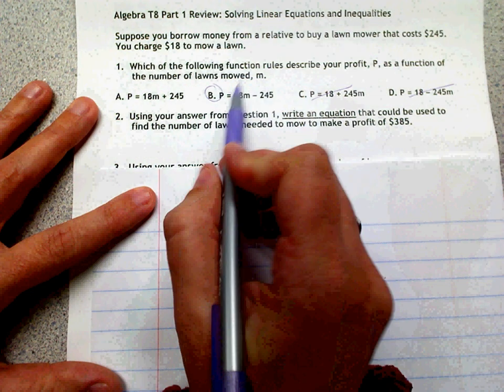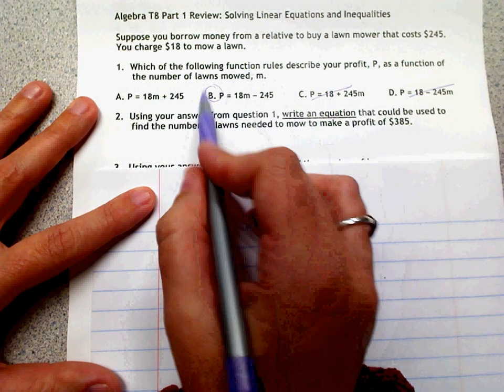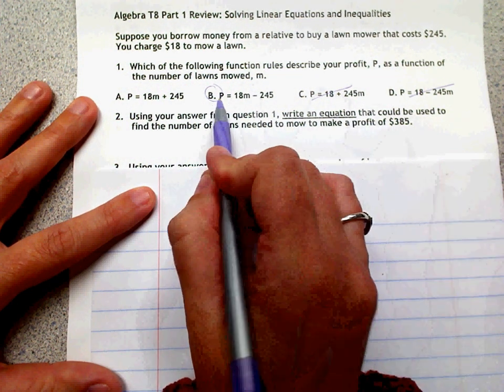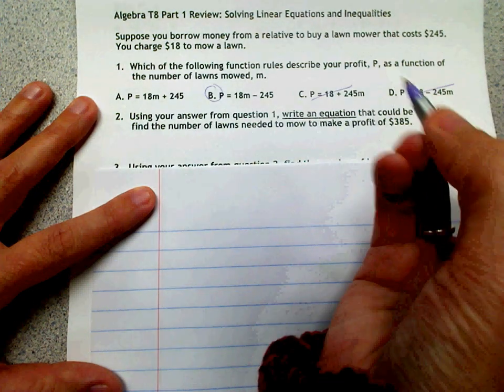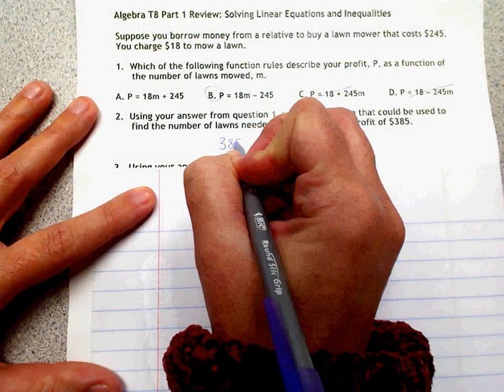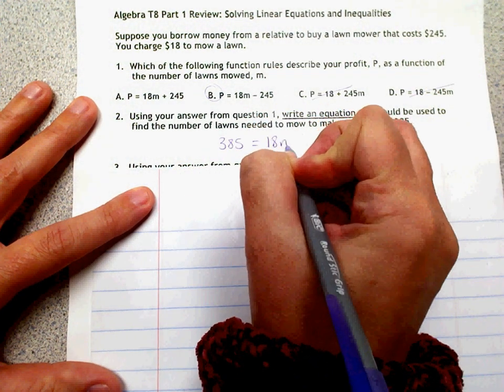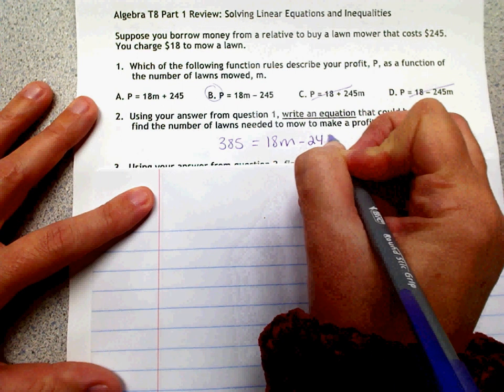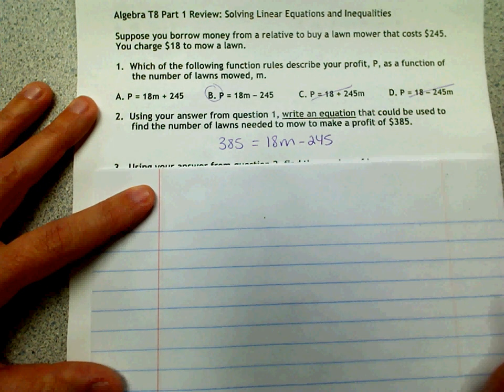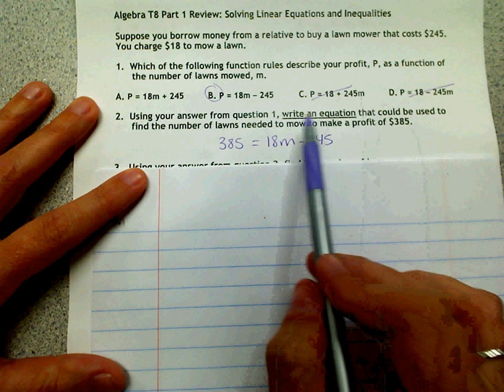So we're going to use our equation from number one and we're just going to replace P with $385. So we'll have $385 equals 18M minus $245. And that's all we have to do for part two, just is to write the equation.